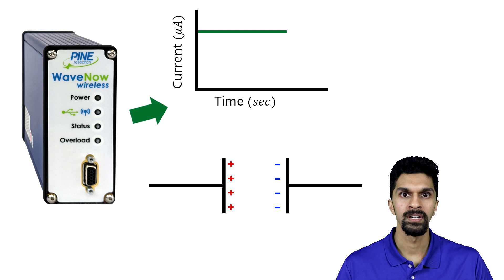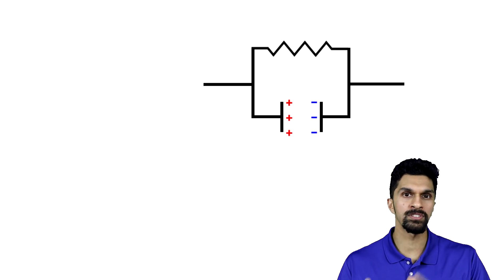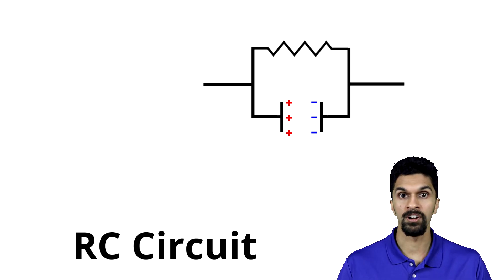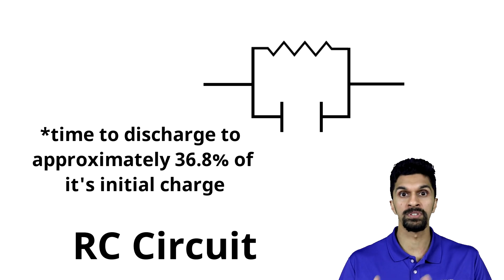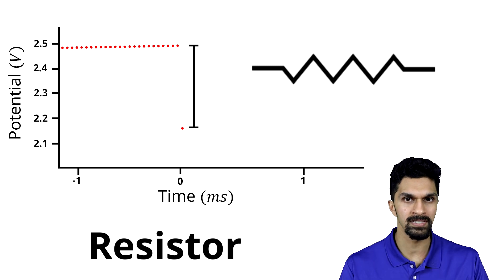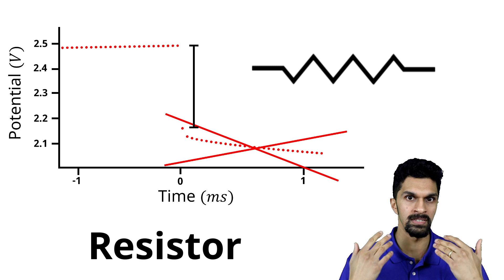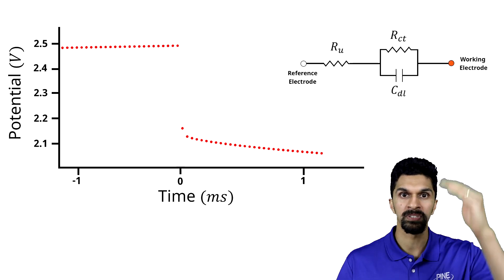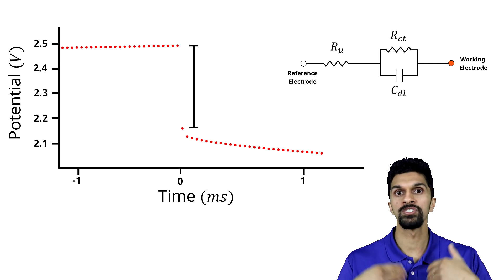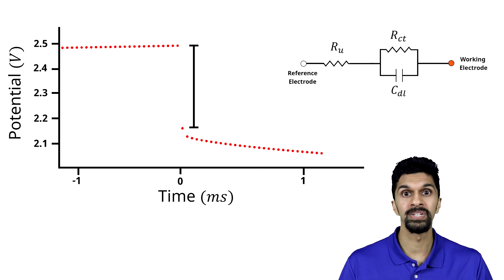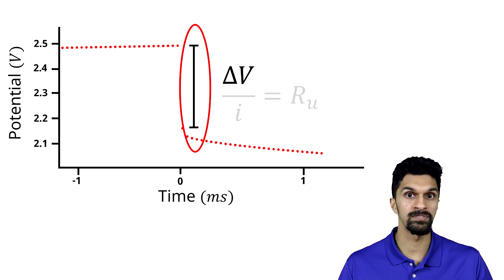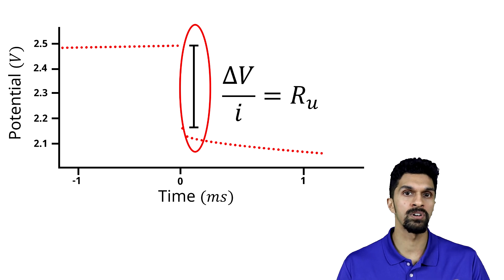This gradual decay in the potential is due to the discharging of the capacitor CDL. When the potentiostat applied a constant current it charged the capacitor, and when that current was disconnected the capacitor started to discharge. A capacitor and resistor in parallel forms an RC circuit, and RC circuits have a time constant — a measure of how long it takes for a capacitor to discharge. Unlike a resistor where the potential drop is instantaneous, we can infer that the instantaneous potential drop is due to the solution resistance, and the gradual decrease is due to the RC circuit. We can take that potential difference, divide it by the constant current using Ohm's law, and solve for the solution resistance.